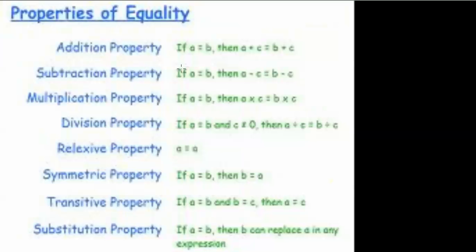In this section, we're going to be looking at reasoning in algebra and geometry. We're going to start by looking at some key concepts: properties of equality. Let a, b, and c be any real numbers.